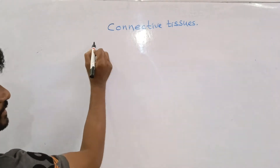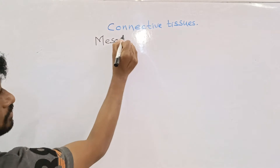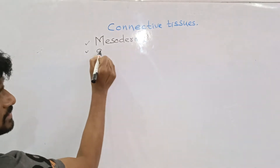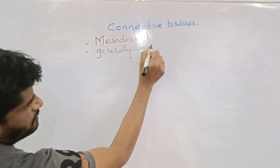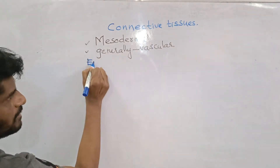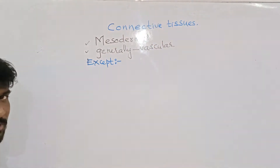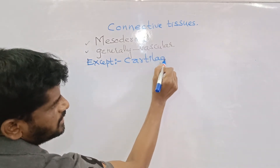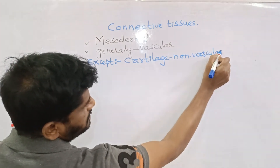Connective tissues are generally mesodermal in origin. Connective tissues are generally vascular. There is one exceptional case in the vascular variation of a connective tissue, and that exceptional case is the cartilage. Cartilage is a non-vascular connective tissue.